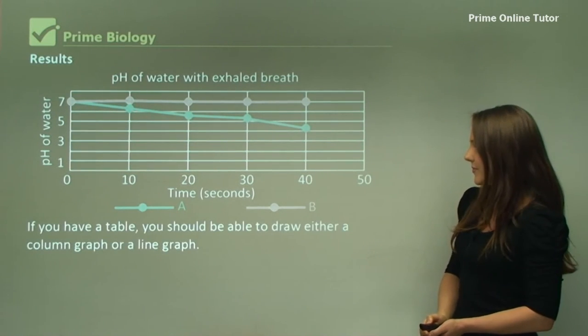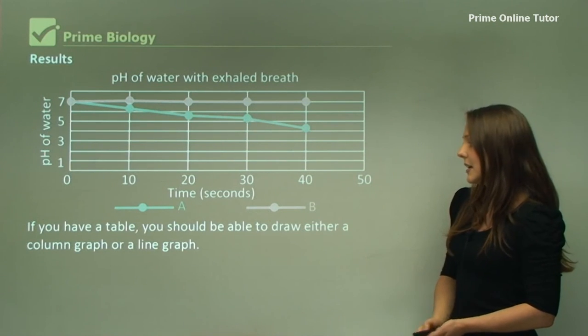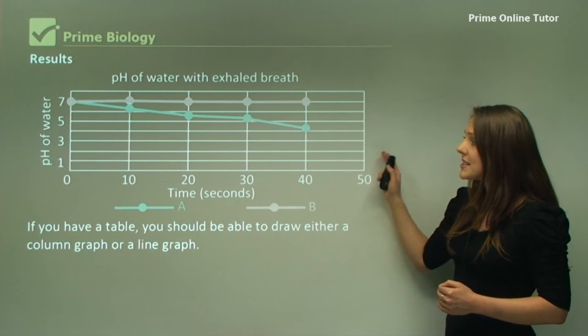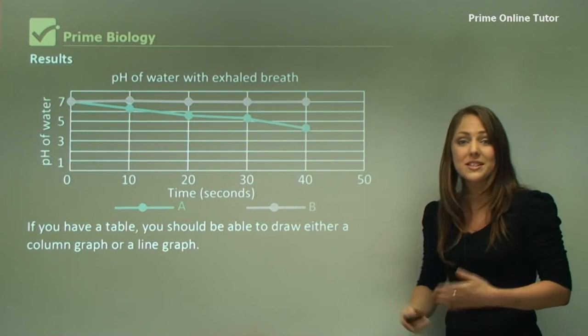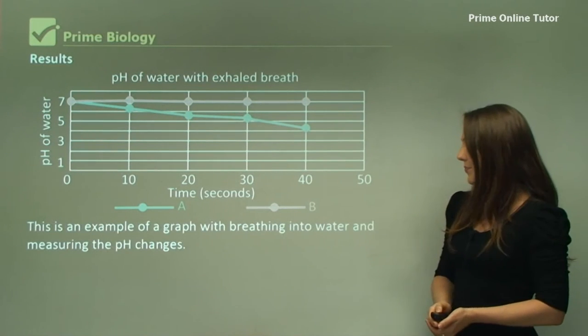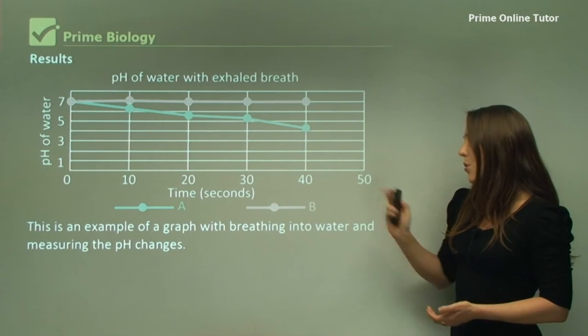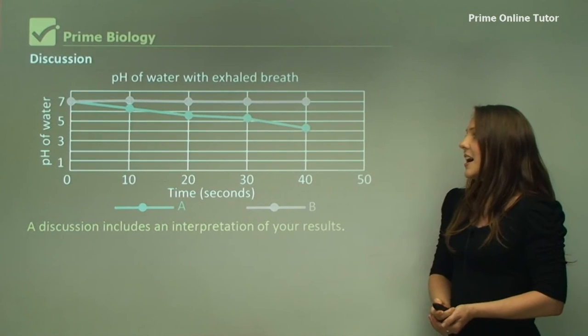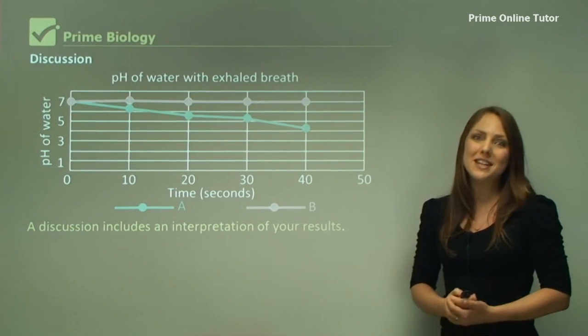You should draw either a column or a line graph, but because this one has two continuous data, a line graph is wonderful for this one, and you must include a key. A discussion includes the interpretation of these results, so what do these results demonstrate?